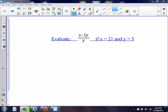Here we have evaluate x minus 5y all over y if x equals 21 and y equals 3. So again, I'm going to use substitution.